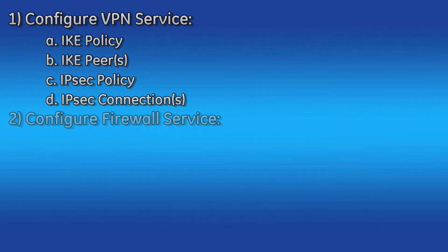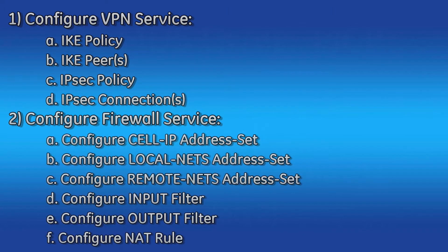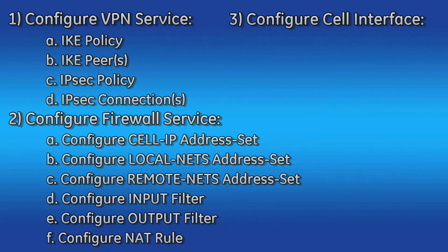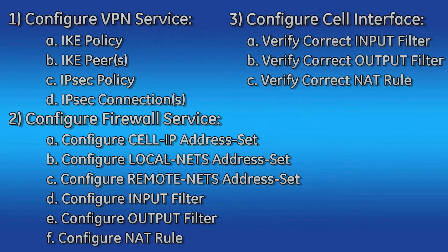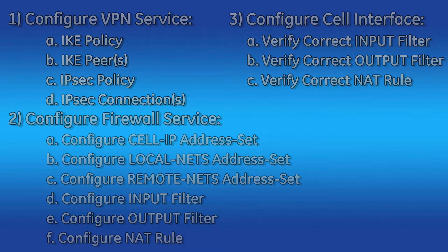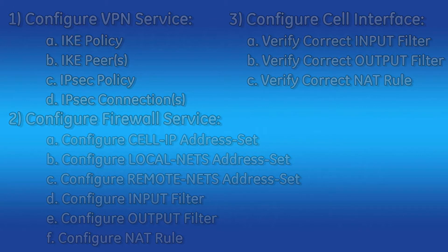Configuring the firewall service, which includes configuring a cell IP address set, a local NETS address set, a remote NETS address set, the input filter, the output filter, and a NAT rule. Next, we will configure the cell interface by verifying the correct input firewall filter, output firewall filter, and NAT rule are being used.